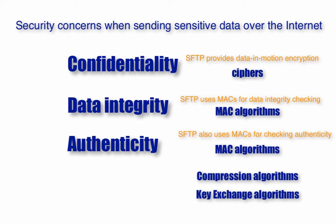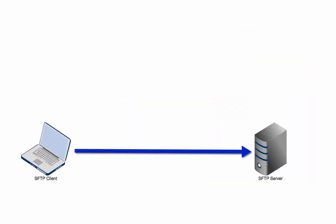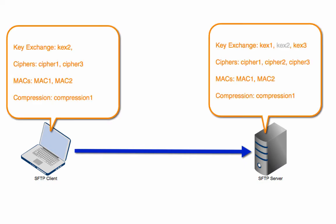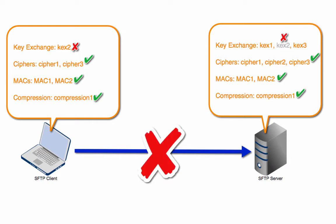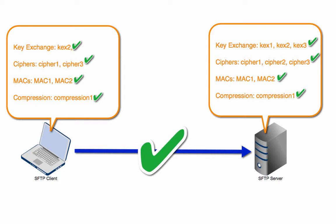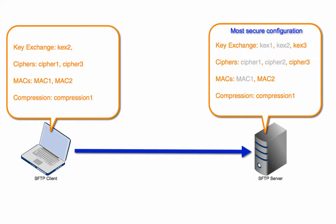Configuring these algorithms in your SFTP server simply entails going to the algorithms module and selecting the algorithms you want to enable. When a user connects to your server, that user's SFTP client and your SFTP server will first negotiate which algorithms to use during the SFTP session. Whatever they arrive at depends on the algorithms supported by the client and those algorithms you've enabled. If you haven't enabled certain algorithms and they're the only ones the client supports, the client will have problems connecting. Certain algorithms are more secure than others, so if you want highly secure SFTP sessions, you'll need to force sessions to employ only the most secure algorithms.